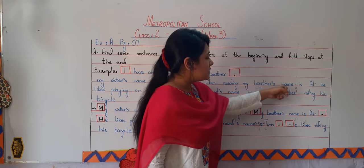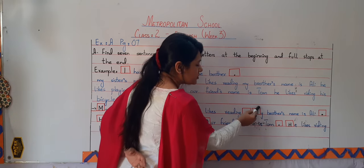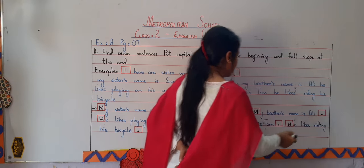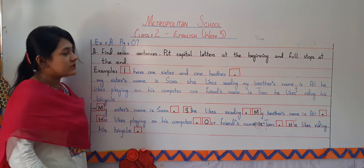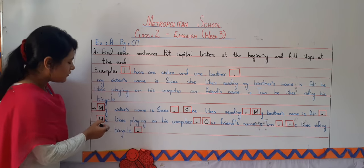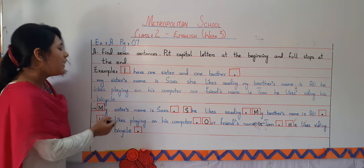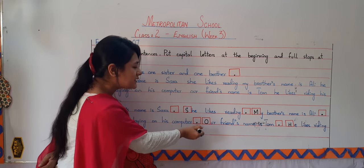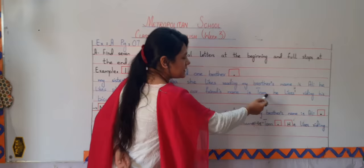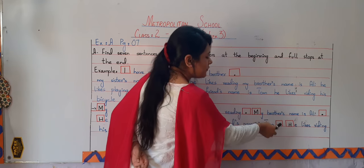Then, 'My brother's name is Ali.' This is another sentence, so in the same manner we have changed M to capital and marked a full stop at the end. After that comes the sentence, 'He likes playing on his computer.' The first alphabet should be capital, so we have written it in capital form and put a full stop. Just the same, 'Our friend's name is Tom' — we have turned the small O into its capital form and put a full stop at the end.